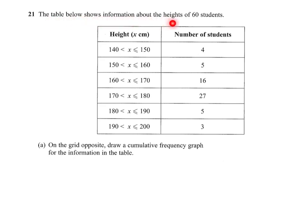The table below shows information about the heights of 60 students. On the grid opposite, which you'll see in a moment, draw a cumulative frequency graph for the information in the table. So to begin with, we need to work out the cumulative frequencies.